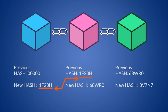As we have seen, changing even a single comma in the input totally changes the output. So you cannot change a transaction within a block that has already been validated in the chain, because you would also have to change all subsequent ones.